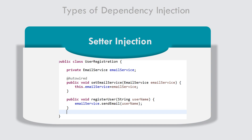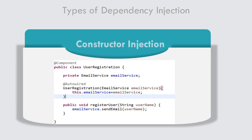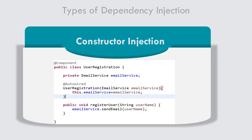Spring also provides another type of injection called constructor injection. The advantage of this is that whenever a component is mandatory for you, you go with constructor injection. If I feel that email service is mandatory for my user registration, you can always pass it through a constructor. So those are the different types of injections available.